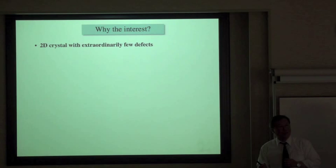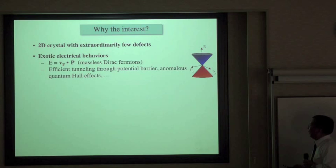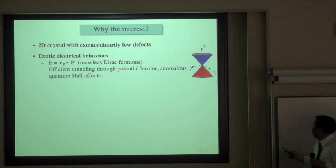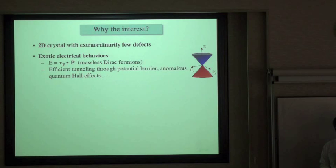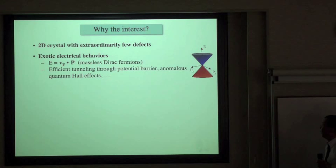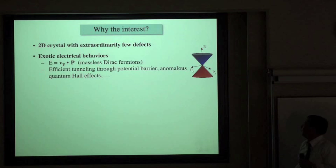If you look at the electronic behavior, it's quite exotic. Graphene has a linear dispersion relation, so carriers behave like two-dimensional massless Dirac fermions. Because of that, they can efficiently tunnel through potential barriers and give rise to phenomena such as anomalous Hall effects.